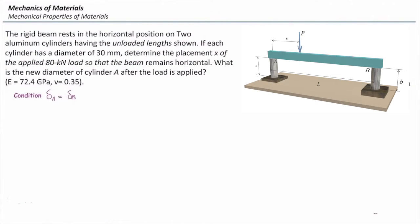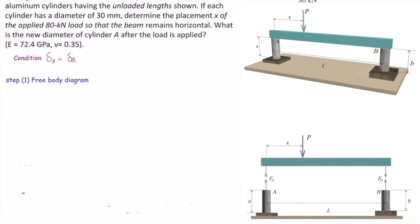The condition that we need to satisfy is delta A should be equal to delta B, and I will start with free body diagram. Free body diagram means I need to make that element free. How many restraints do we have here? Two, A and B. So we remove and put unknown forces there, and I will sum up the forces in Y direction should be zero.